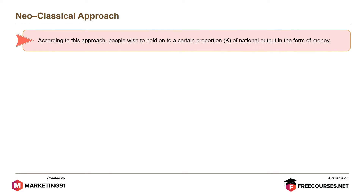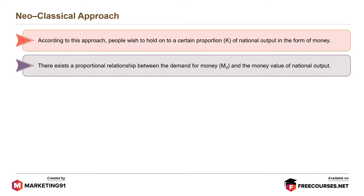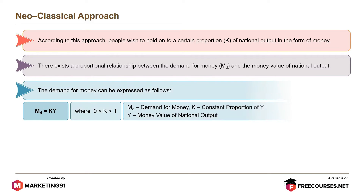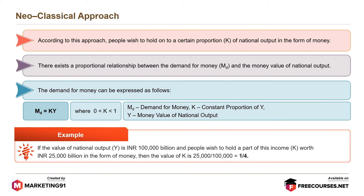According to the neoclassical approach, people wish to hold on to a certain proportion K of national output in the form of money. There exists a proportional relationship between the demand for money, MD, and the money value of national output. The demand for money can be expressed as MD equals KY, where MD is the demand for money, K is the constant proportion of Y, and Y is money value of national output. For example, if the value of national output Y is Rs. 1 lakh billion and people wish to hold K worth Rs. 25,000 billion in the form of money, then the value of K is 1 divided by 4.